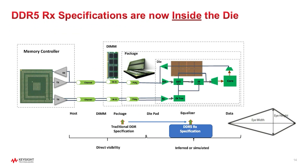So how is this going to impact the way that we perform measurements? The traditional place for DDR specification was at the balls of the DRAM package. Unfortunately, the eye is going to be very closed by the time we probe there. We need to make a measurement of the signal quality — we really need to move the DDR5 receiver specification inside the die after equalization. And to get there, we need to either infer or simulate the signal quality.